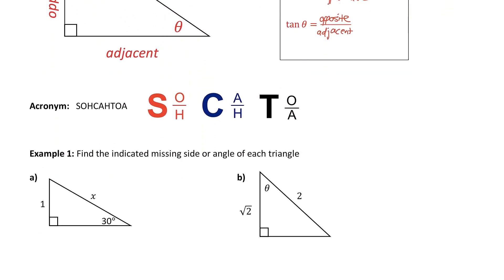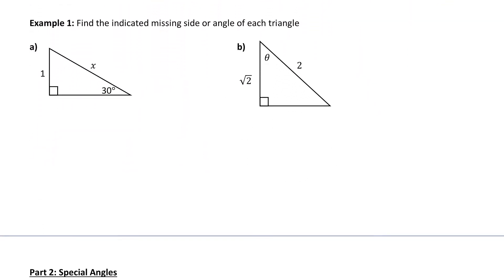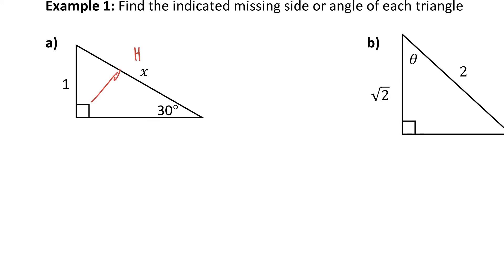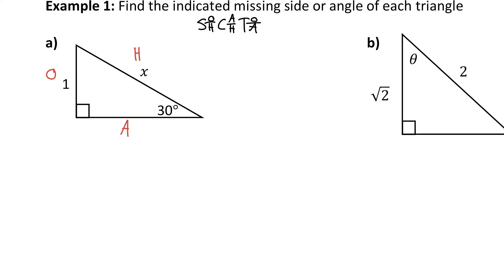Now let's do a couple of examples where we need to use SOHCAHTOA to help us find a missing side or angle in a triangle. Example 1A: our reference angle is 30 degrees. It's often helpful to label your opposite, adjacent, hypotenuse before you start the question. The hypotenuse, labeled H, is always across from the 90 degree angle. The opposite side is across from the reference angle, labeled O, and the adjacent side is the side that's touching the reference angle.